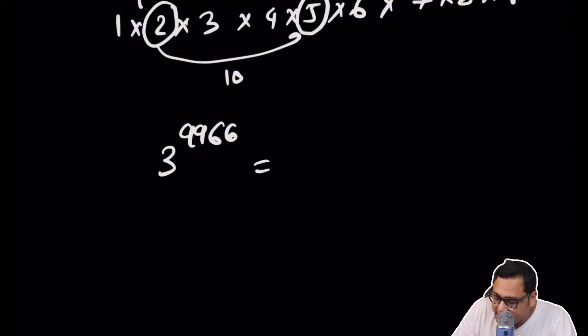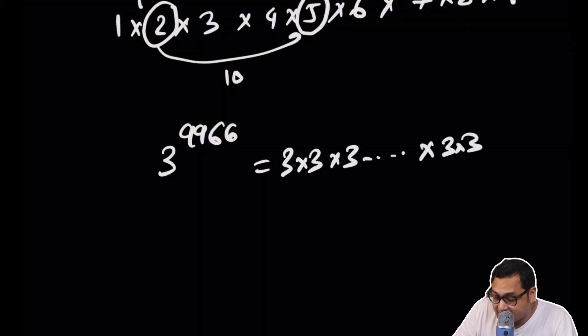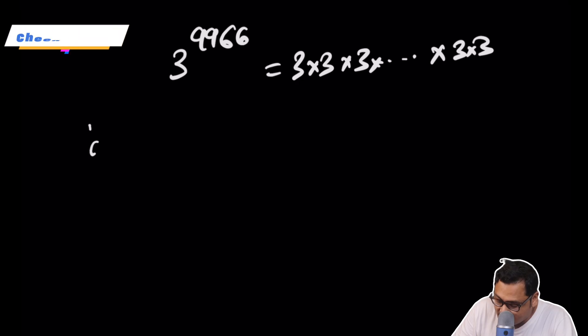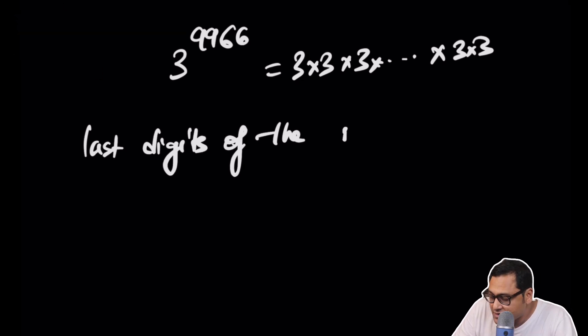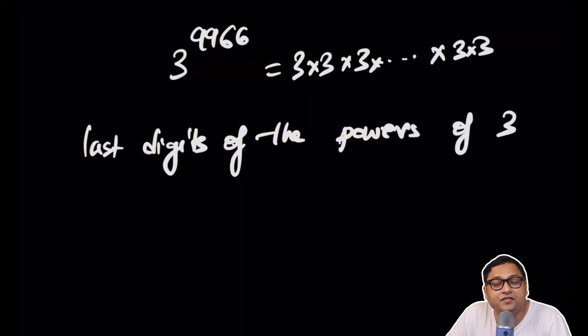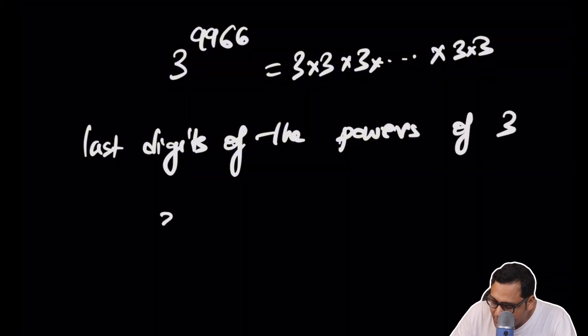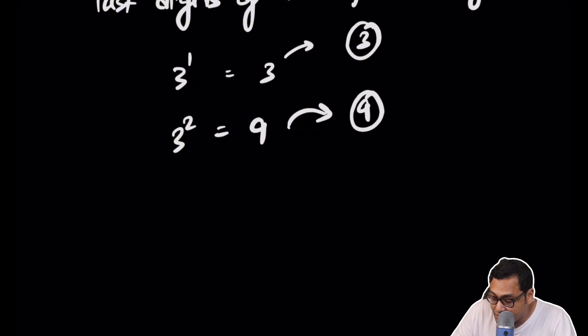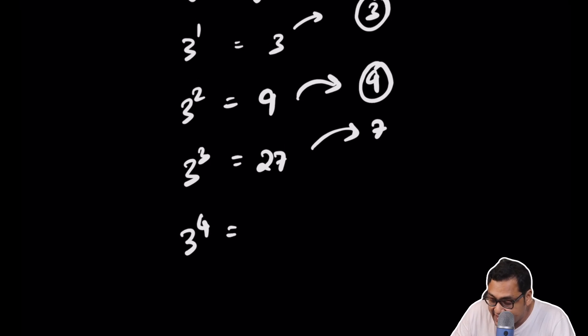Whatever is the last digit of three to the power 9966, that will be the last digit of the total sum. Three to the power 9966 is simply three multiplied by itself 9966 times — a huge number. But we can observe a pattern: the last digits of the powers of three. Three to the power one is three, last digit is 3. Three to the power two is nine, last digit is 9. Three to the power three is 27, last digit is 7. Three to the power four is 81, last digit is 1.